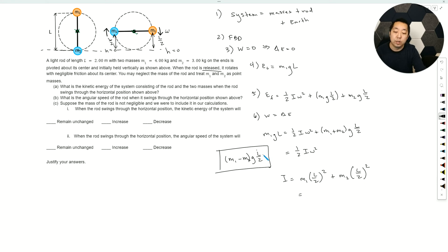So this is going to be M1 plus M2 times L squared over 4 equals I. Then we have M1 minus M2 G times L over 2 equals one-half times one-fourth M1 plus M2 L squared omega squared.